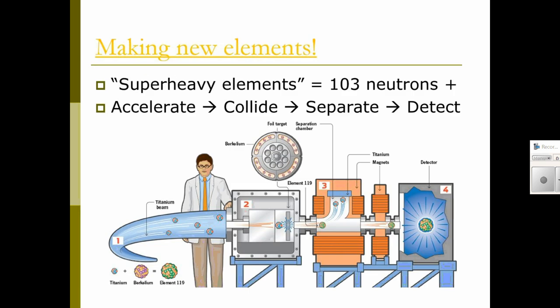And then, elements above number 92, you might wonder, how do they make those? Like element 118, which is the last one on the periodic table. So, these are called super heavy elements. And the way that they do this is they accelerate, sort of like a bowling game, atoms at each other, nuclei. And then, they hope that they stick together when they collide. Afterwards, they separate out their different atoms and then they detect the new super heavy elements. Some of them don't exist very long.